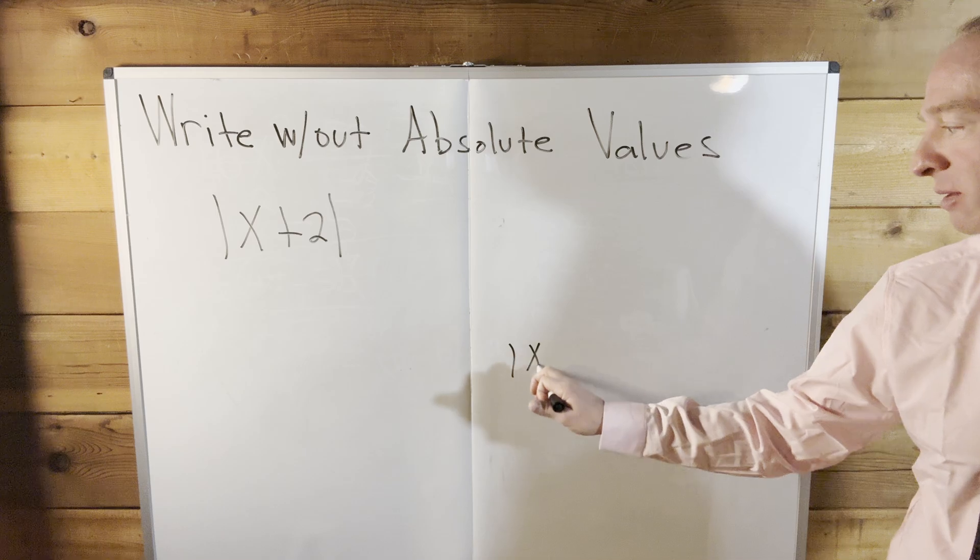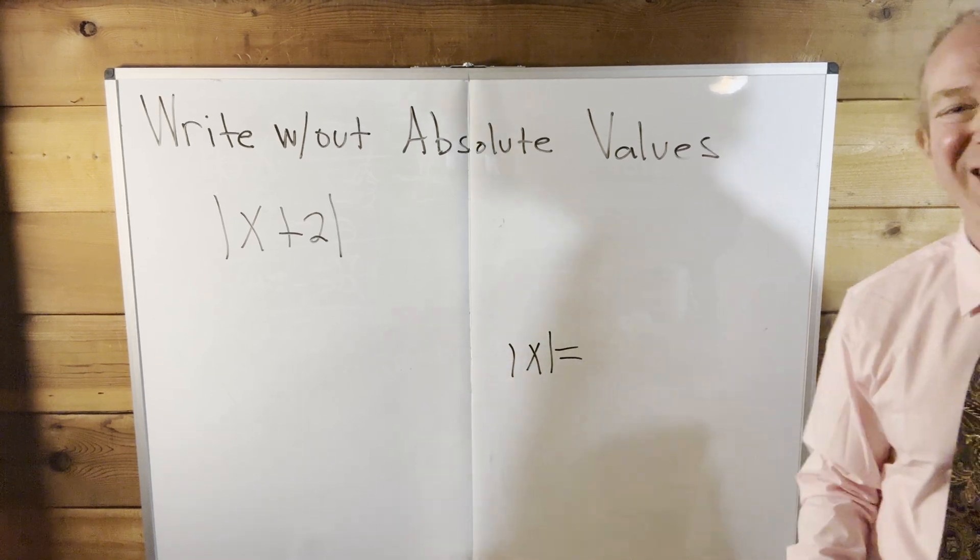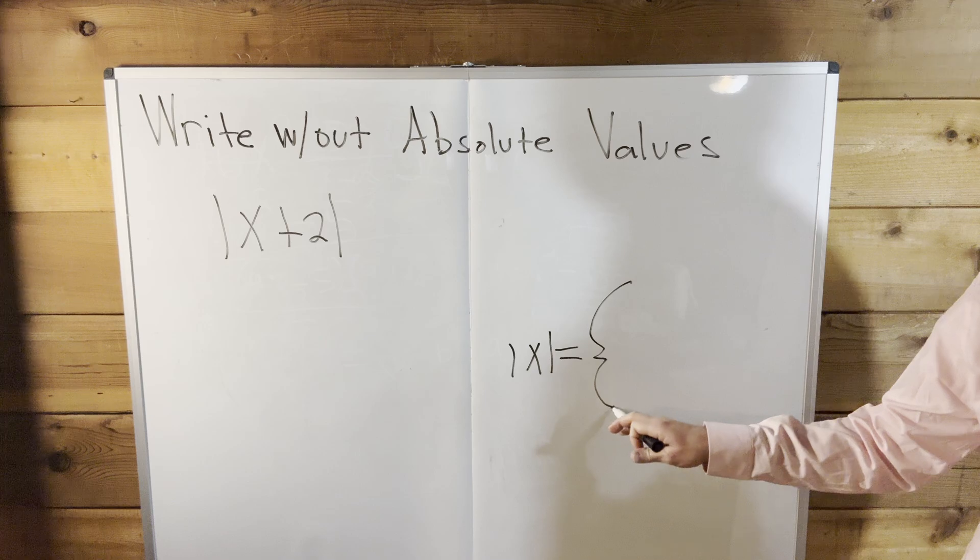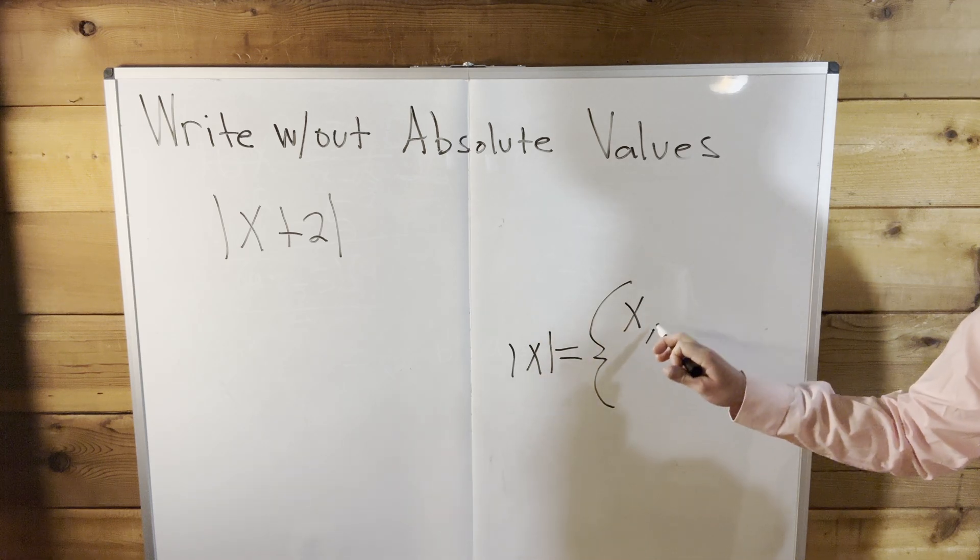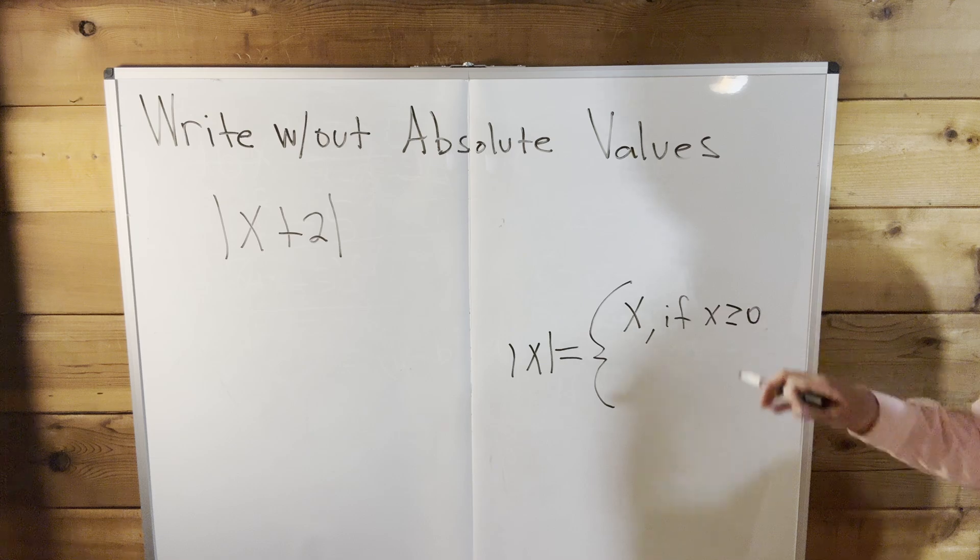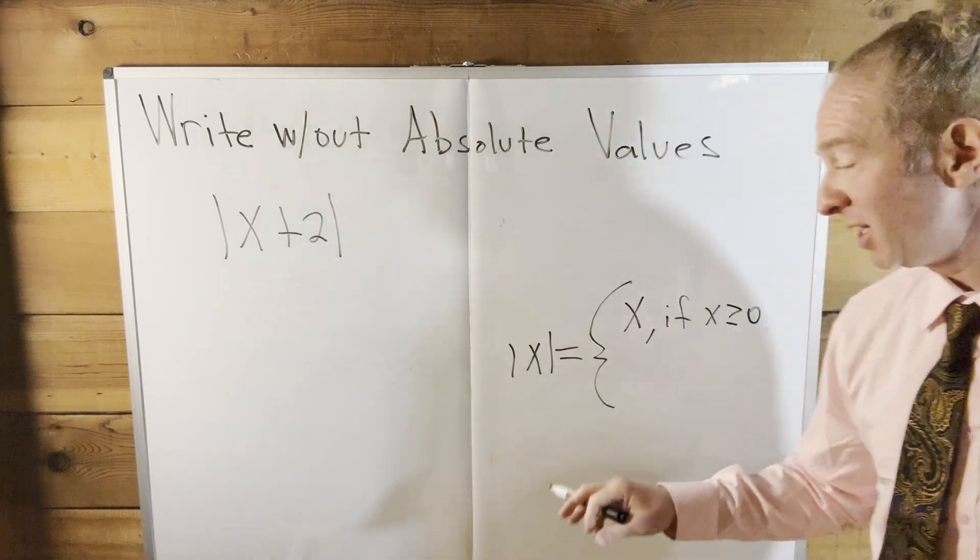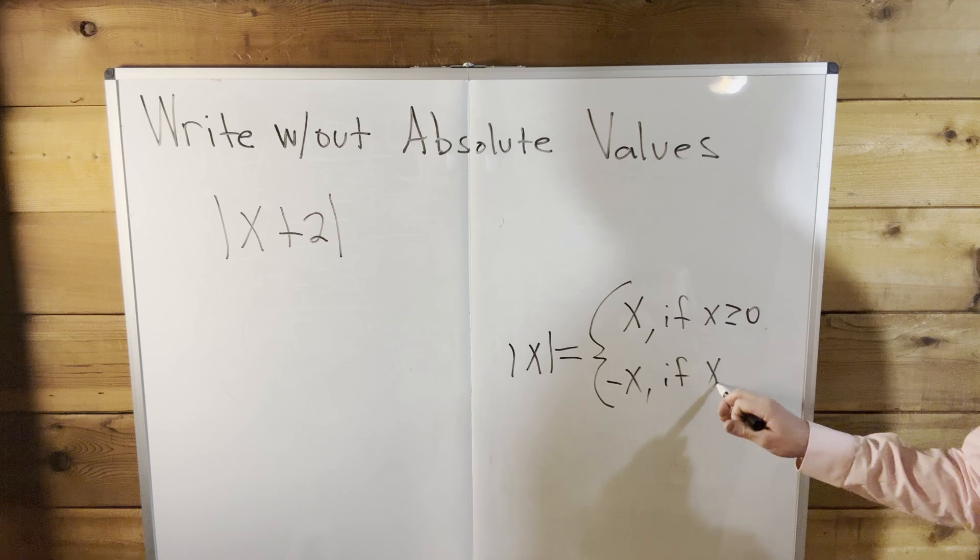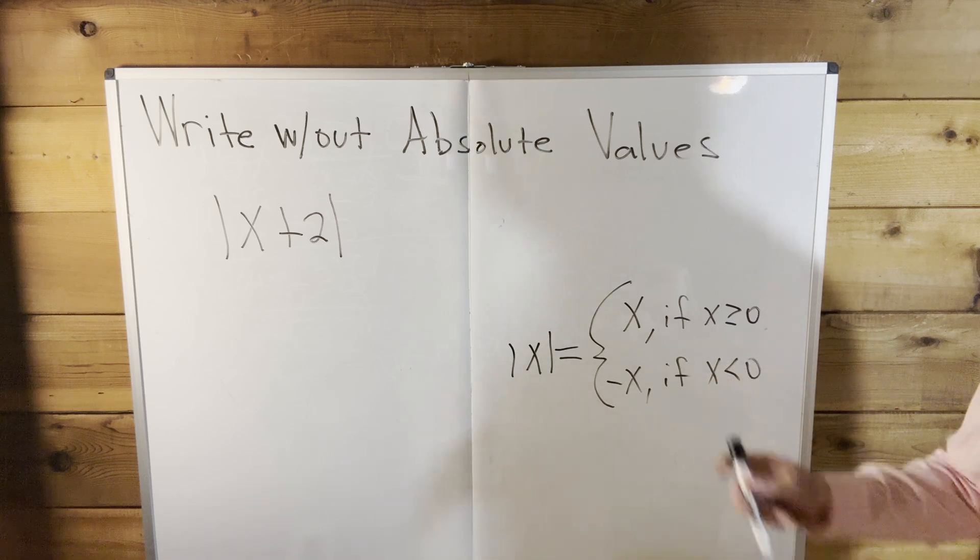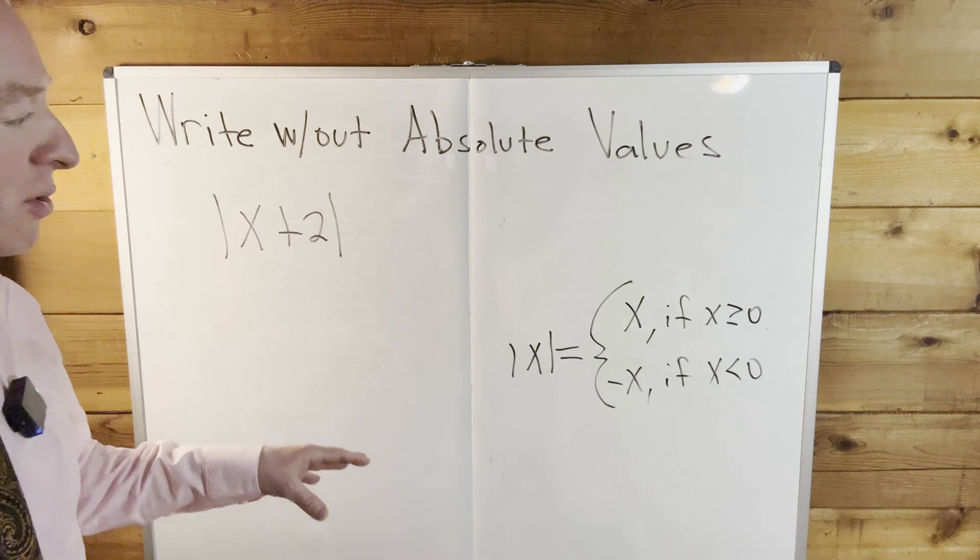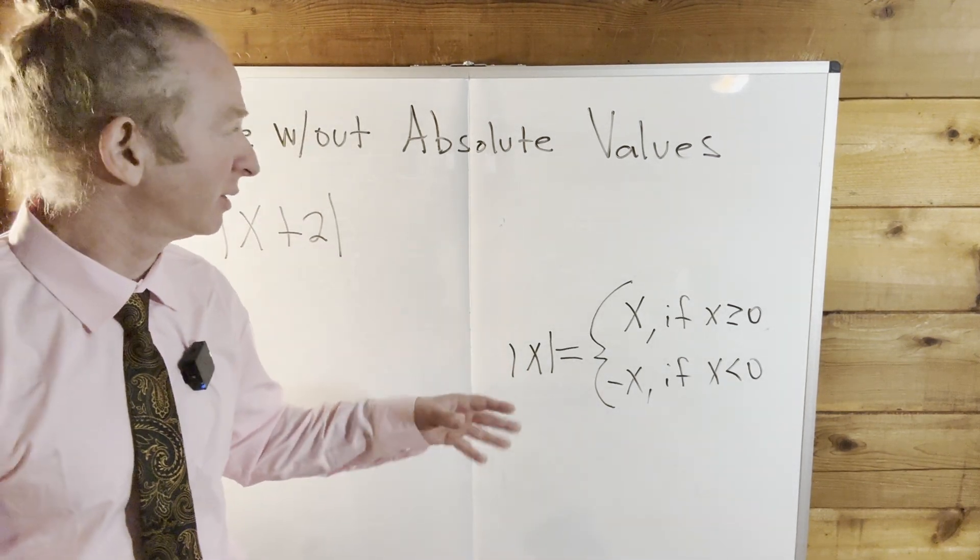The absolute value of x can be defined as a piecewise function. It's equal to x if x is greater than or equal to 0, and it's equal to minus x if x is less than 0. That is the definition of absolute value. This is extremely important to know, especially if you're going to be studying calculus.